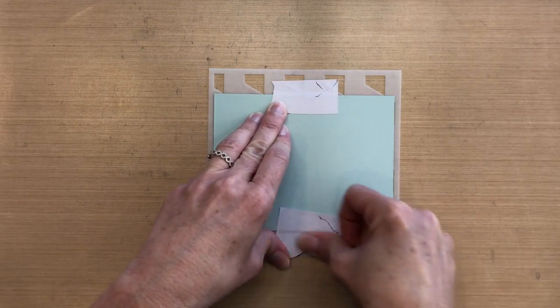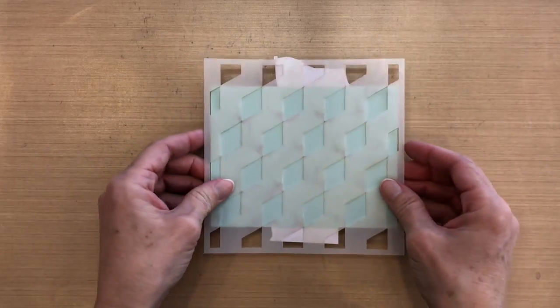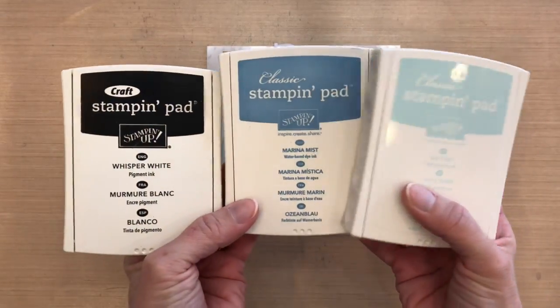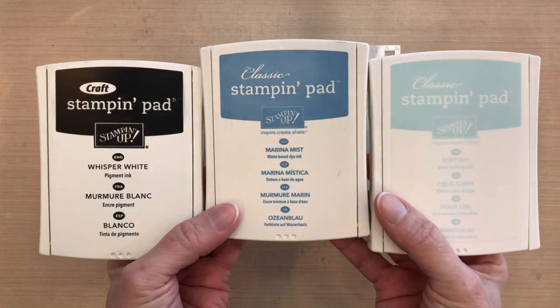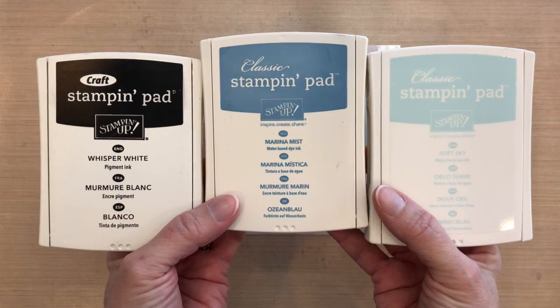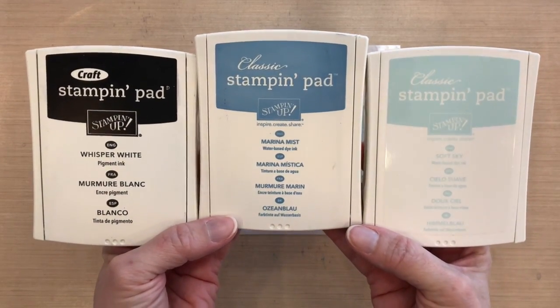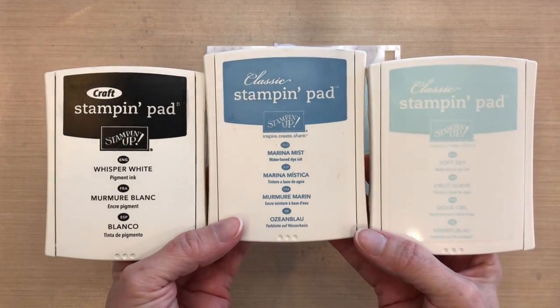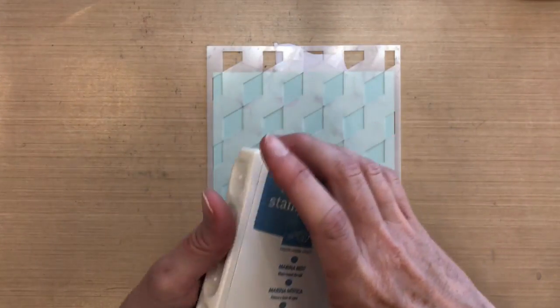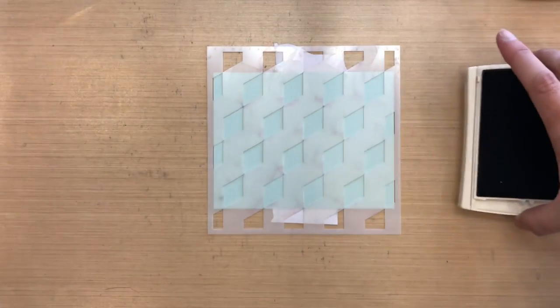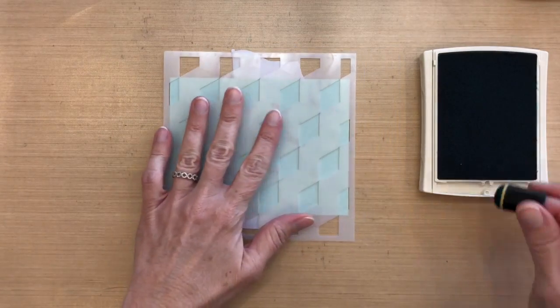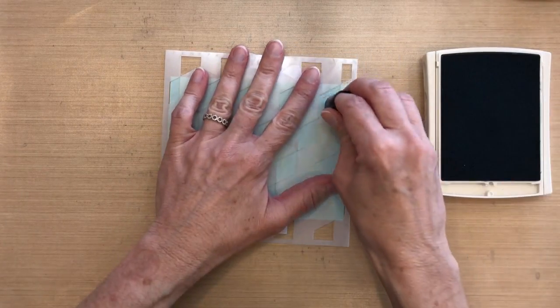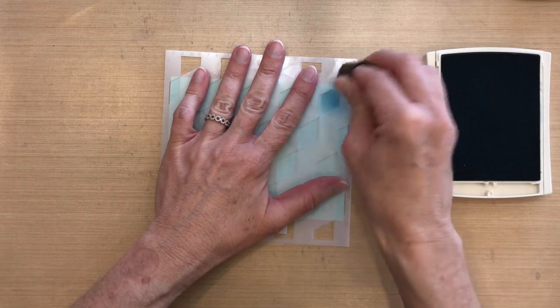This cardstock is Soft Sky by Stampin' Up, and here are the three inks I'm going to use. I've got Soft Sky so that I have a tone-on-tone, Marina Mist which is going to give me just a slightly darker color, and then I'm using white as well. I have the right side of the cube showing through my stencil, so I'm going to start with my dark ink and I'm just going to use a sponge dauber to color in what is showing.